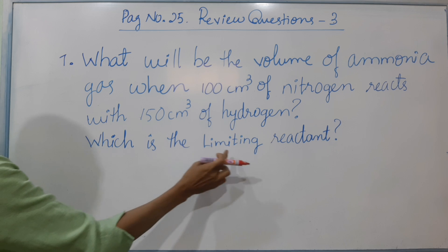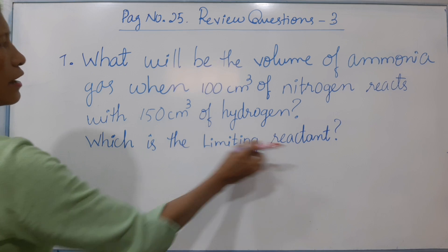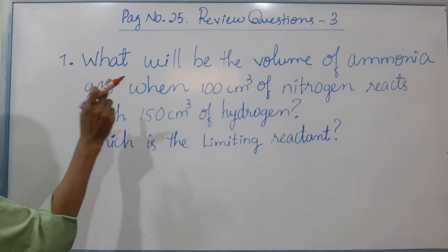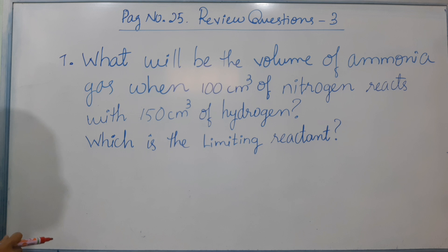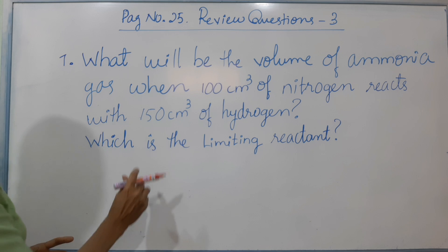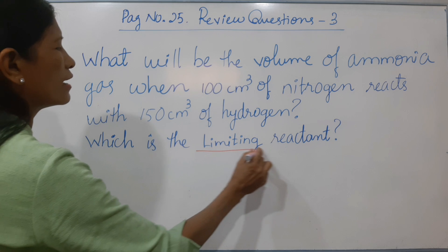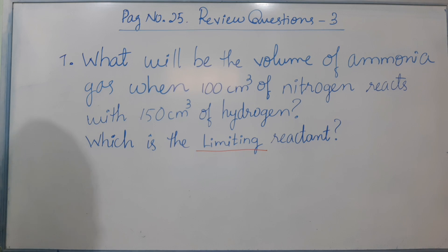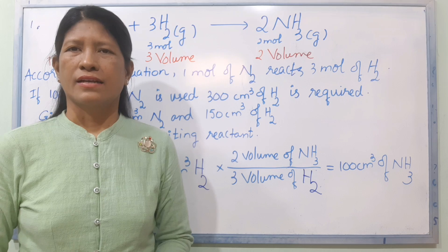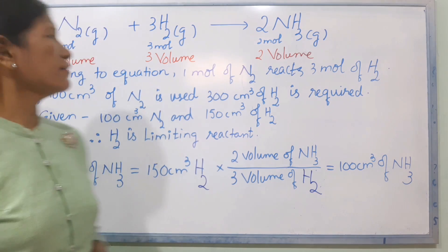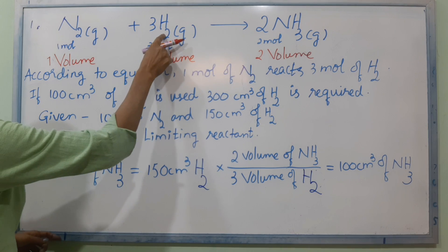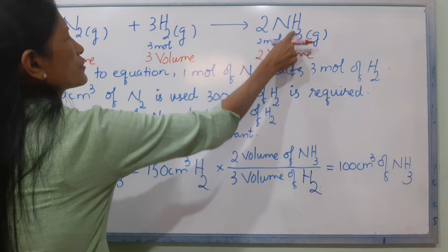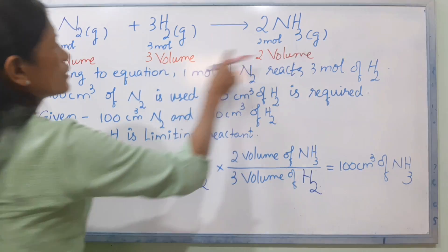Which is the limiting reaction? This is the equation: nitrogen N2 gas plus hydrogen H2 gas gives NH3, ammonia gas.